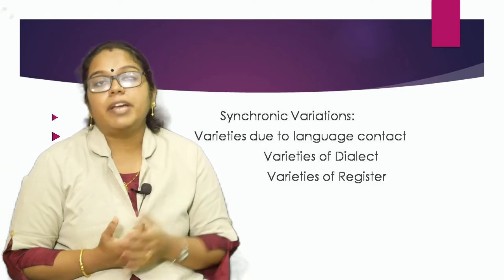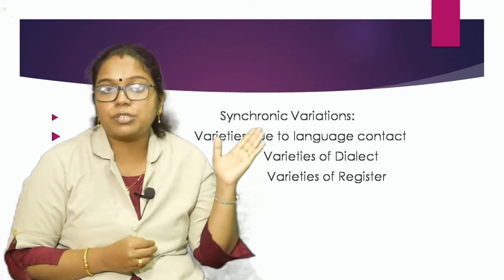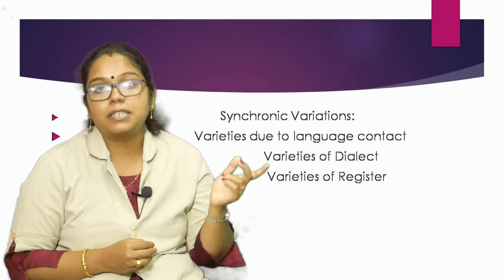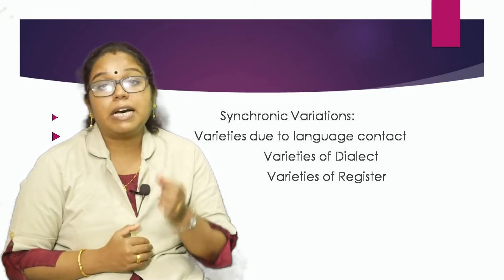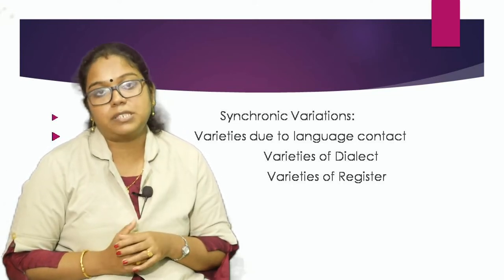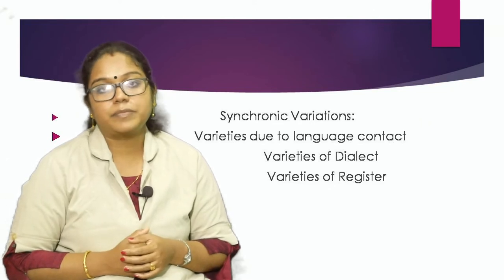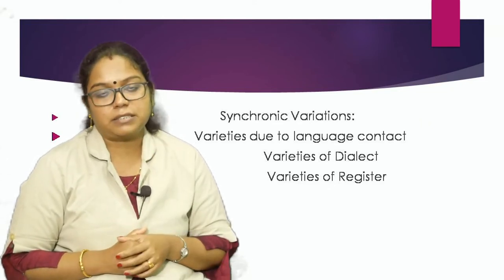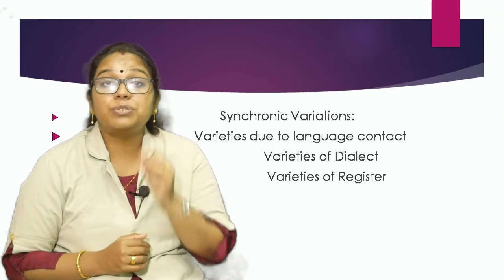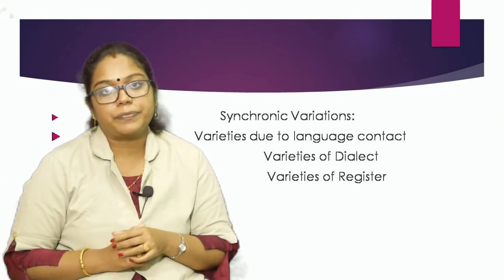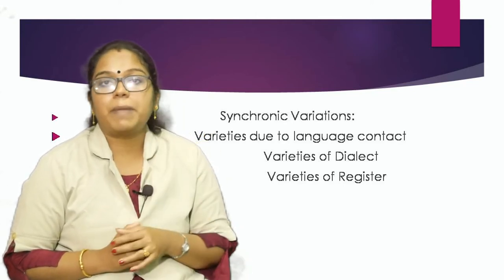Synchronic variations of English can be studied under three headings: varieties due to language contact, varieties of dialect, and varieties of register. Here we are going to discuss regional variation in language. The first term is dialect. The variety of a language according to the user is called a dialect. It is determined by the speaker or user's social and geographical background.